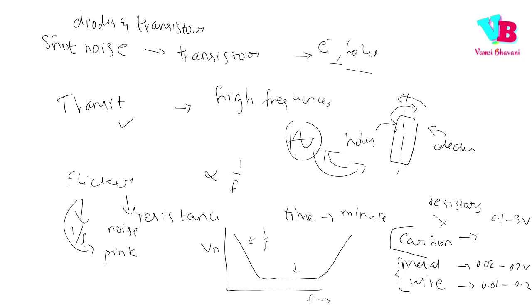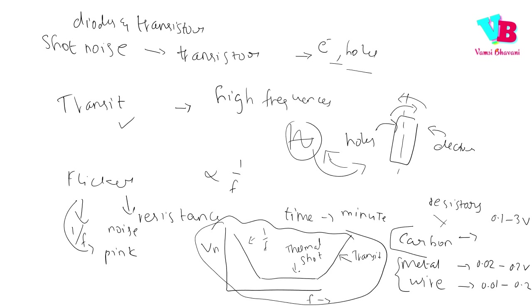For thermal and shot noise, as frequency increases, the noise voltage is almost constant — forming a flat line on the graph. Transit time noise increases at higher frequencies. This graphical representation summarizes the behavior of all noise types. Thank you very much. Jai Hind, Jai Bharat.